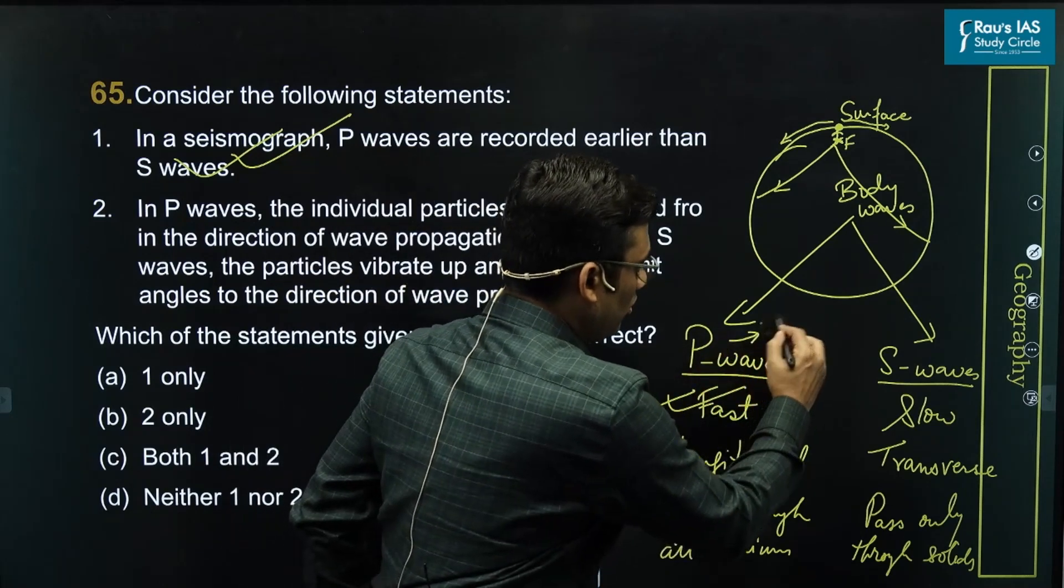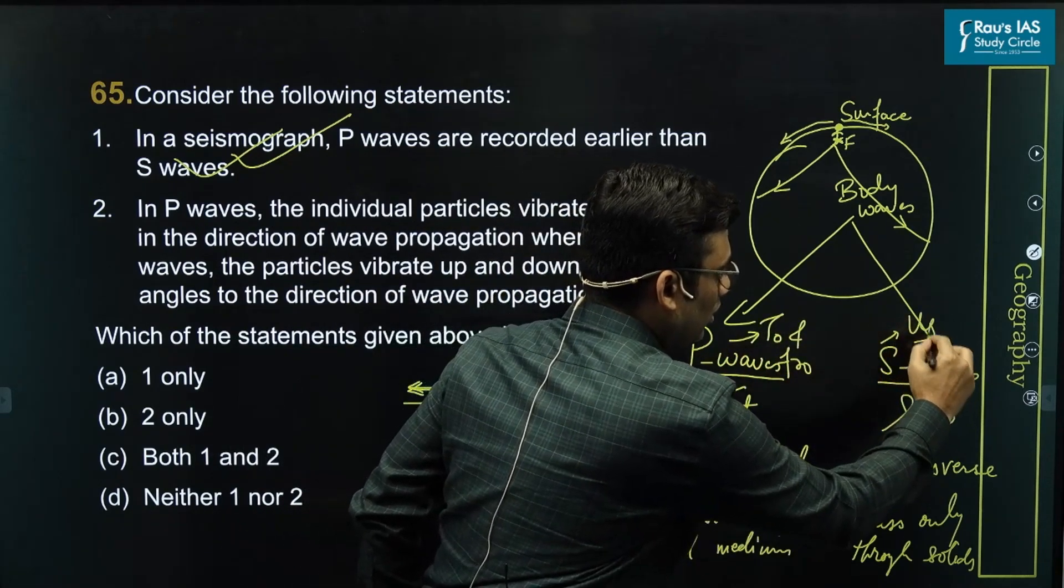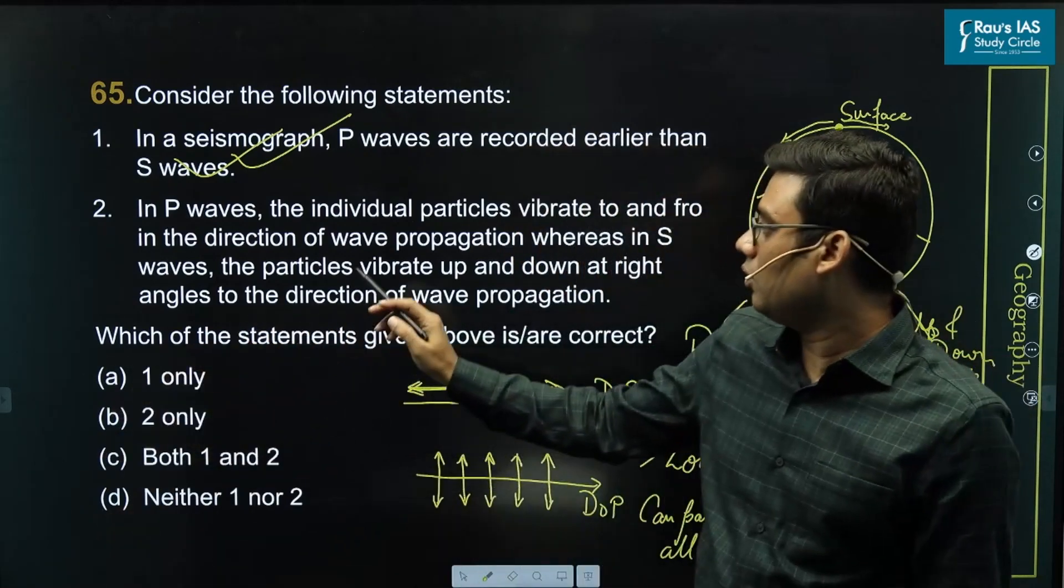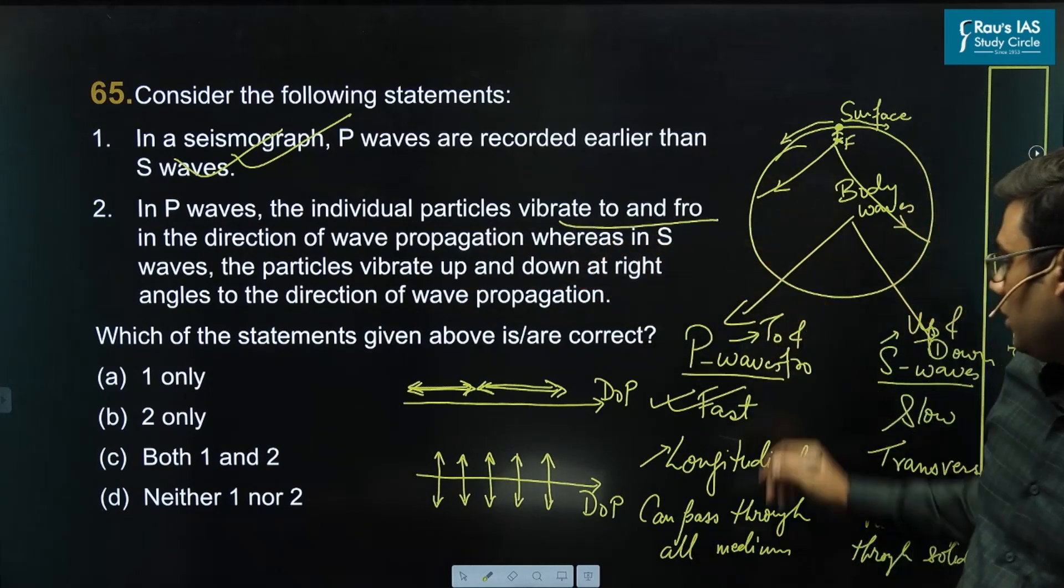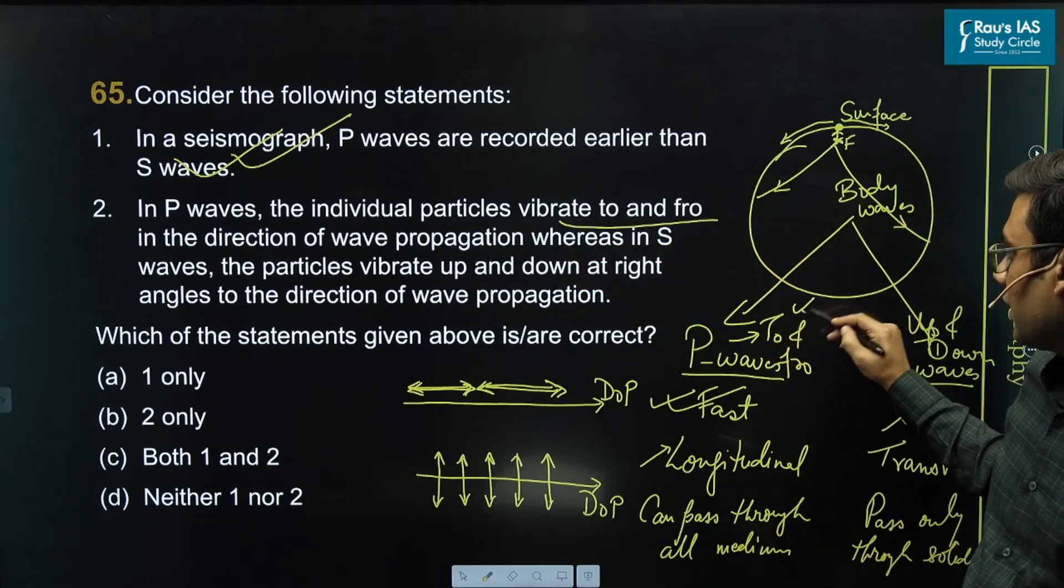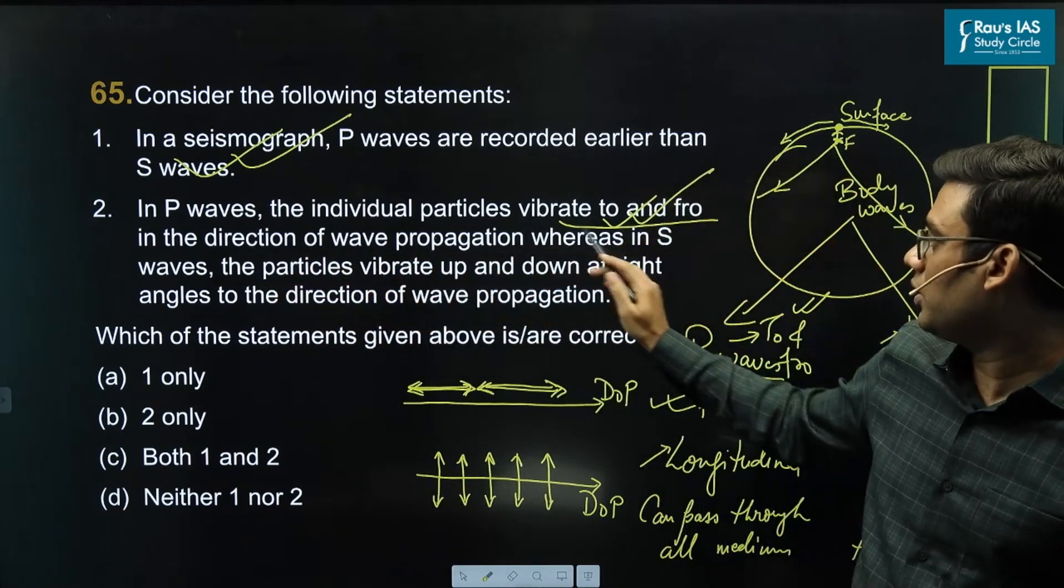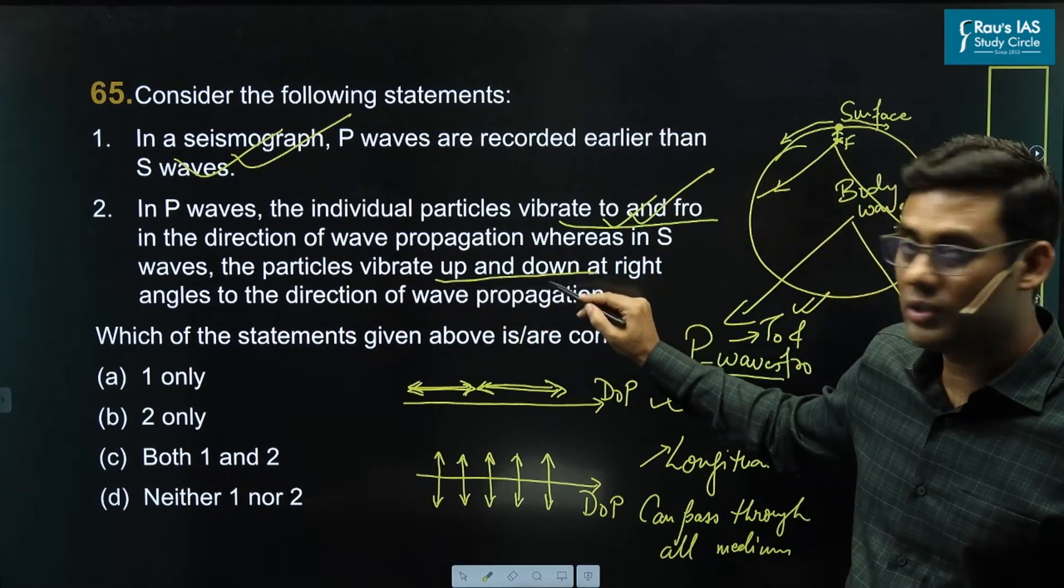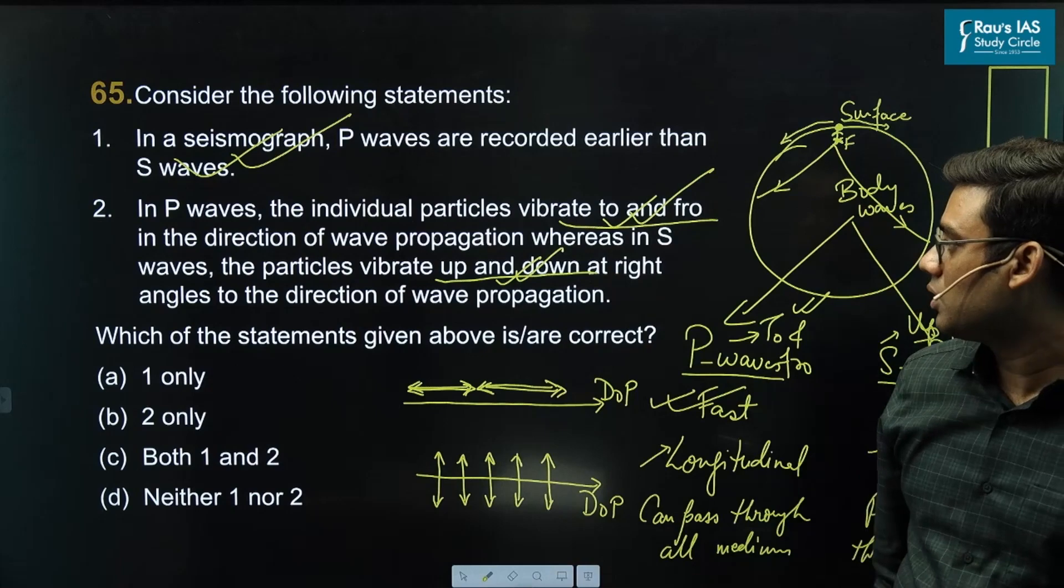P waves to and fro, S waves up and down. So, now if I take a look at this statement: in P waves, the individual particles vibrate to and fro. Particles to and fro. Yes, absolutely correct. In the direction of wave propagation. Whereas S waves, the particles vibrate up and down, which is the property of transverse waves. So, yes, this also becomes correct.